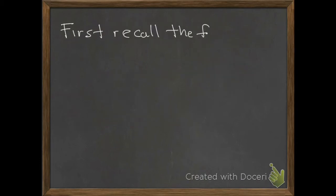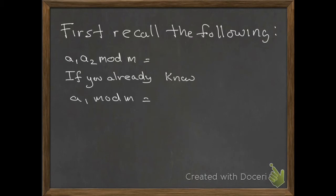Before we do a numerical example, I want to recall something about calculating with the modulo operator. For example, if we want to calculate a1 times a2 mod m, and we already know what a1 mod m equals—it equals r1—